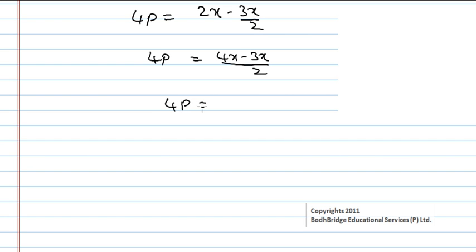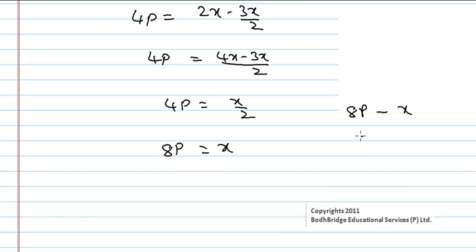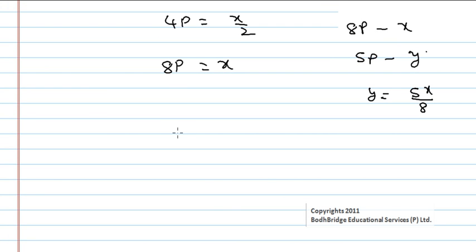So 4p cost is x by 2, which means 8p cost is x. The cost of 8 pens equals x, which is the total amount Amal paid for all things. But now we want the cost of 5 pens only. Since 8p costs x rupees, the cost of 5 pens, say y, will be 5x by 8.